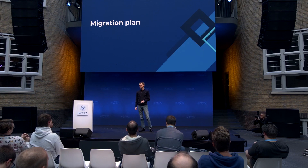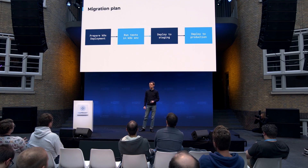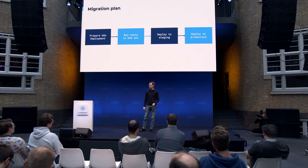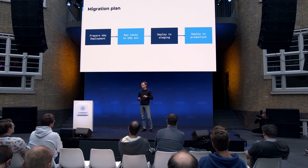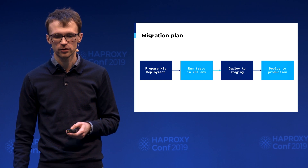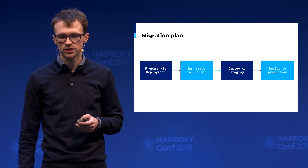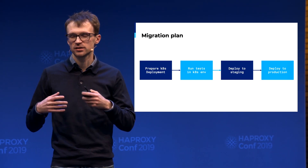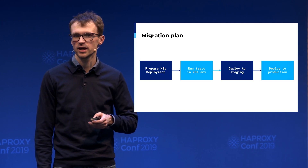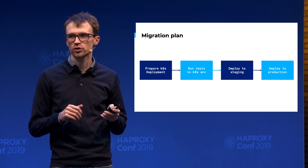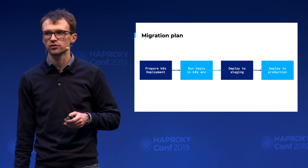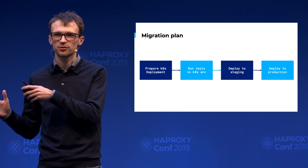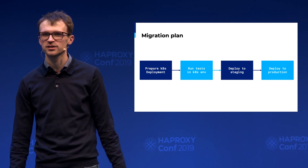Our migration plan looks pretty simple. If you have a service running on EC2, you prepare a Kubernetes deployment by containerizing it, making code tweaks to be container-ready, writing a Dockerfile, and updating your continuous deployment pipelines. After that, you test it in a Kubernetes environment — does it deploy, does the container run? If everything is okay, you deploy to a staging cluster, verify it works and can communicate with other services.